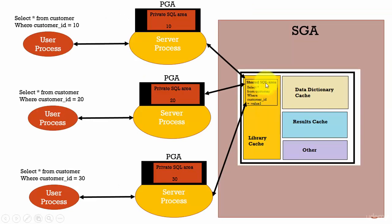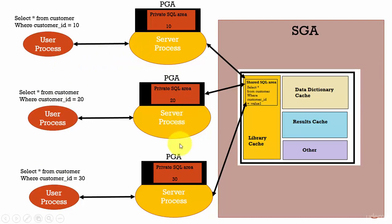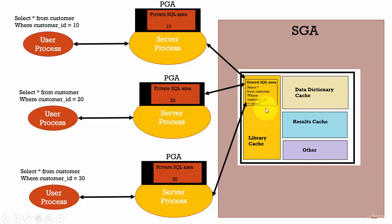Now let's learn about the Shared SQL area within the Library Cache. Whenever you run a SQL statement, Oracle Database allocates a Shared SQL area and a Private SQL area for each SQL statement. This Shared SQL area will contain the parse tree and the execution plan for a given SQL statement. For example, here we have three users running the same SQL statement, so we have three server processes and each user has its own Private SQL area. Since Oracle determined that all three SQL statements are similar except the values — 10, 20, and 30 — it allocates just one Shared SQL area and reuses it for all the user processes.